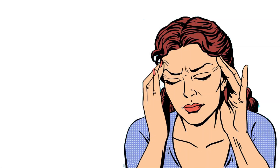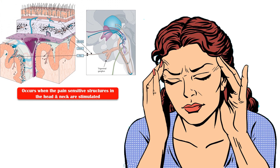Headache is one of the most common symptoms encountered in clinical practice. It occurs when the pain-sensitive structures in the head and neck are stimulated. Some of these structures include meninges, arteries and veins, scalp, muscles, and paranasal sinuses.